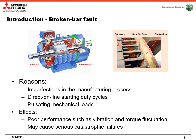Broken rotor bar fault is one of the major faults in squirrel cage induction machines. It can be caused by imperfections in the manufacturing process, direct online starting duty cycles, or pulsating mechanical loads. Once the bar is broken in a squirrel cage induction machine, it can cause poor performance such as vibration and torque fluctuation. Even worse, it may cause serious catastrophic failures.